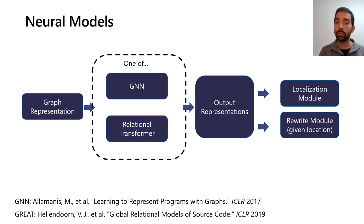The same outputs of the GNN, or the relational transformer, are passed to a rewrite module that, for a given location, can decide the concrete rewrite, for example, to change a plus to a minus or a multiplication.